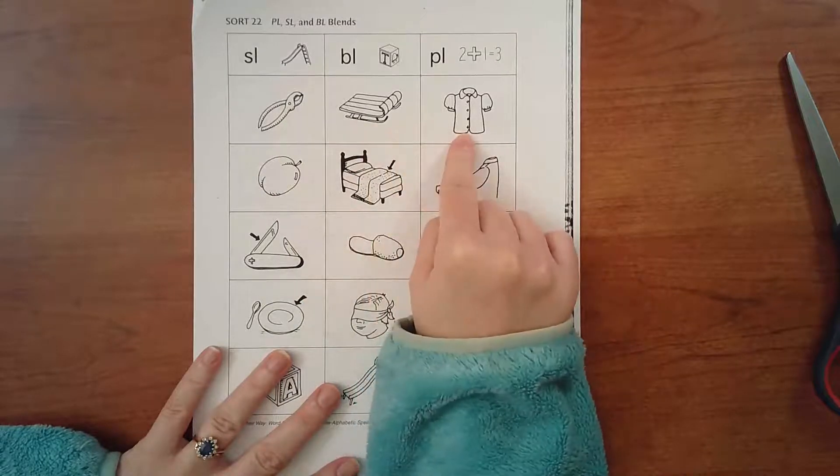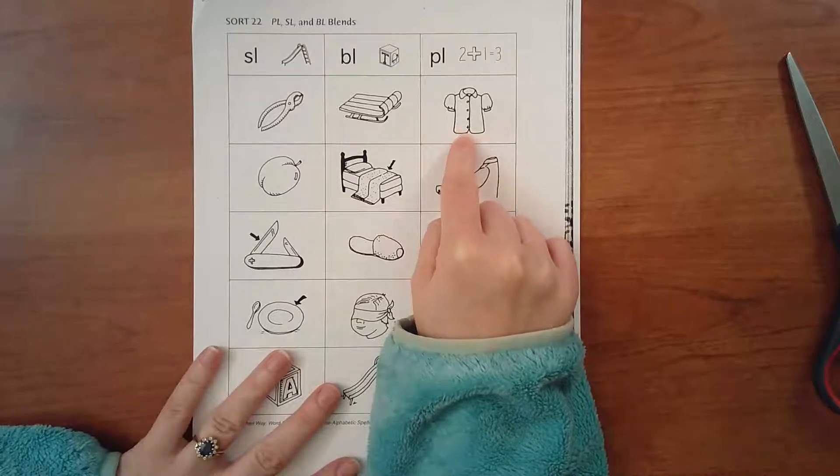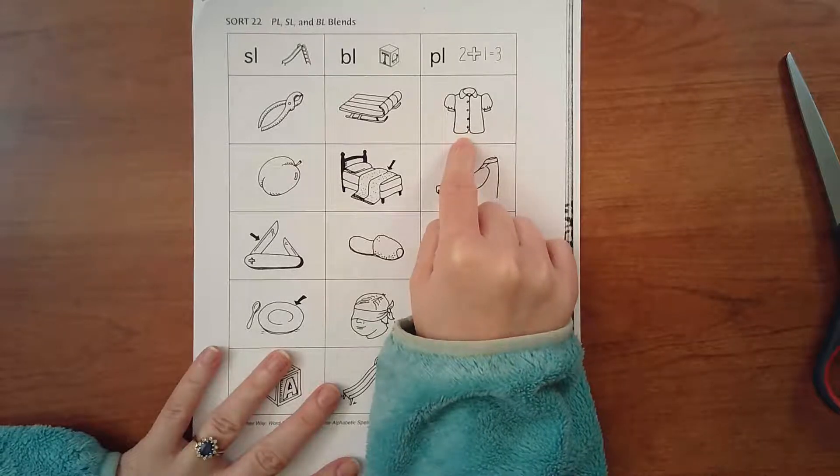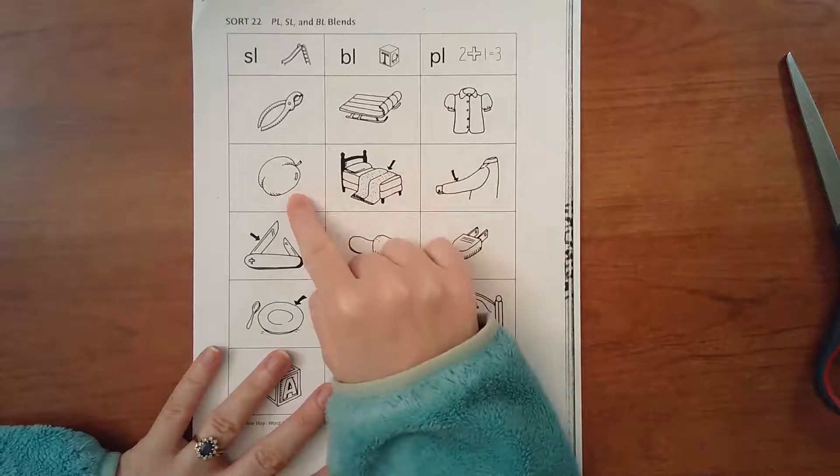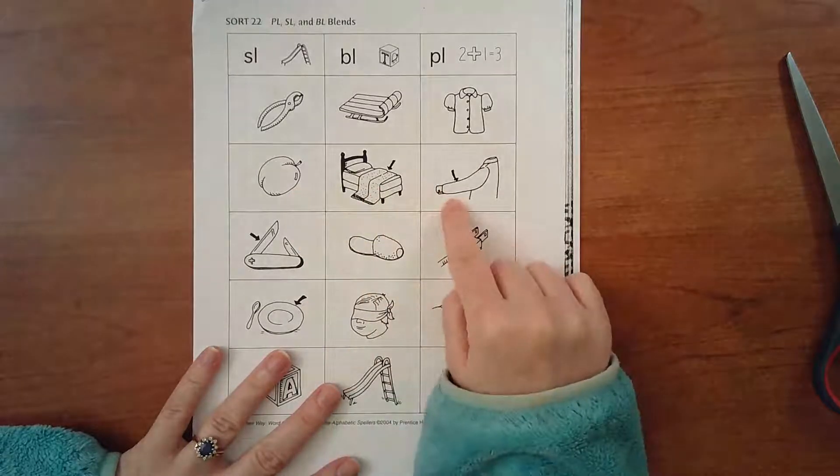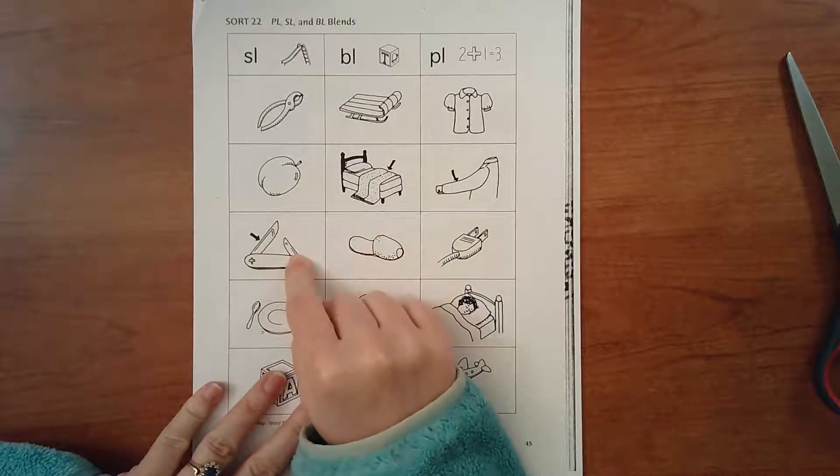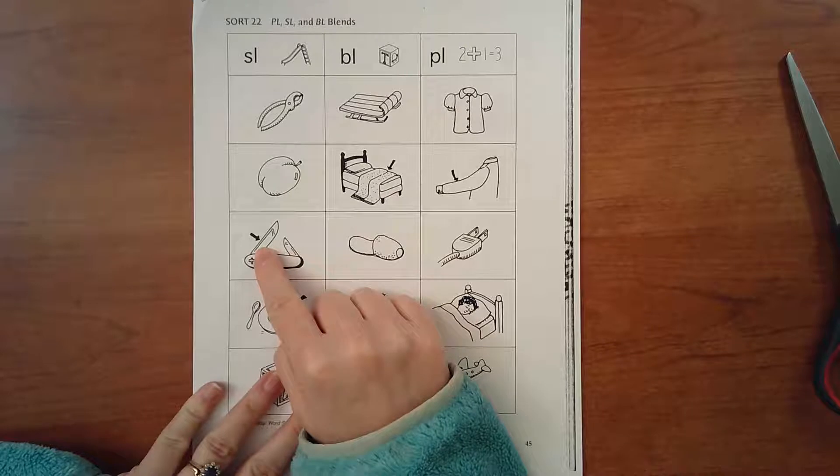Sled. I know this looks like a shirt, but in this case it's a blouse. We don't usually say that word these days as much. It's a little bit more old-fashioned, but blouse. Plum. Blanket. Sleeve. Do you know what that is? It looks like a knife, right? But for us we're gonna be calling it a blade. Blade.